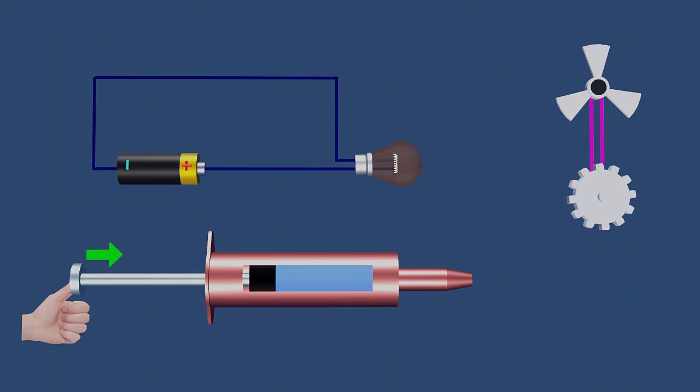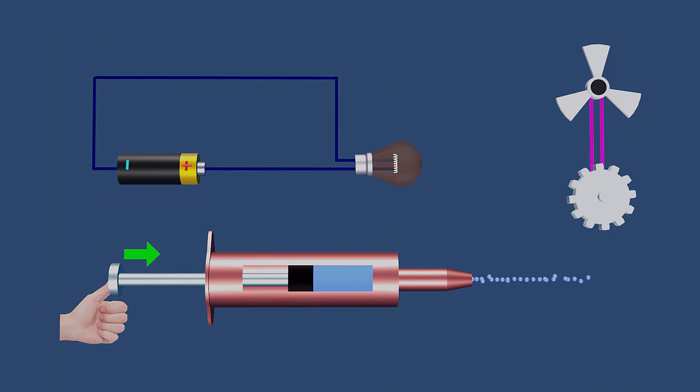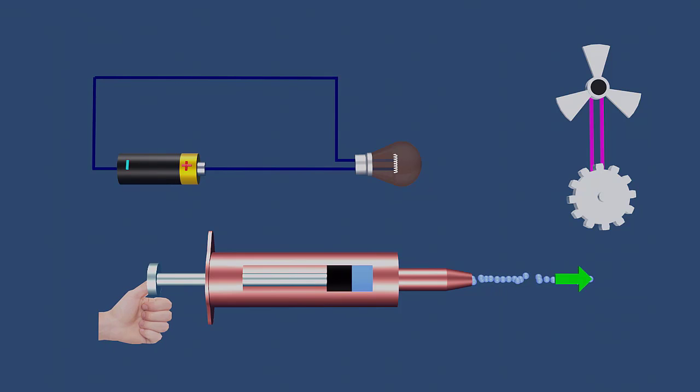Imagine a syringe filled with a fluid. The force or pressure you apply to the plunger acts as the voltage. The harder you push, the greater the pressure, and the faster the fluid flows through the syringe.